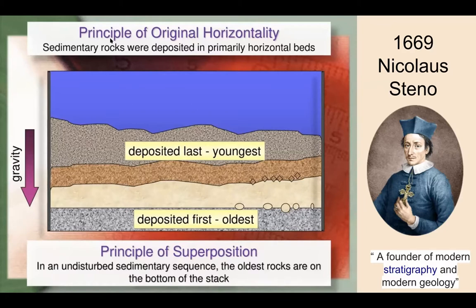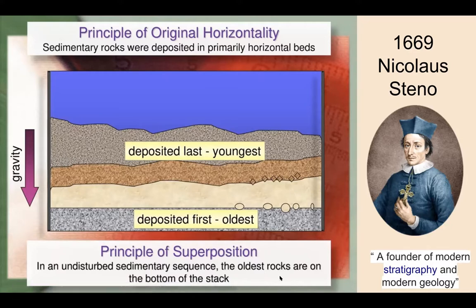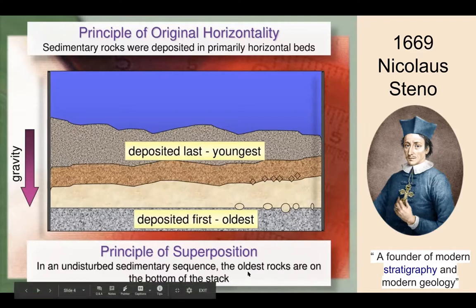By the principle of original horizontality, sedimentary rocks are going to be deposited in horizontal beds. If they're not horizontal, something had to happen to make those strata non-horizontal. He also came up with the principle of superposition, which states that in an undisturbed sedimentary sequence, the oldest rocks are going to be at the bottom of the stack, as shown in this diagram.